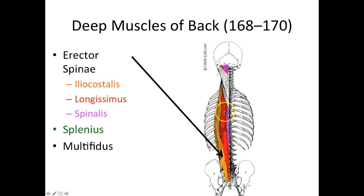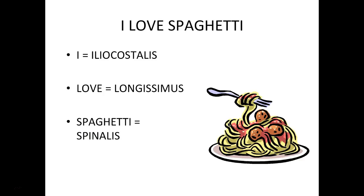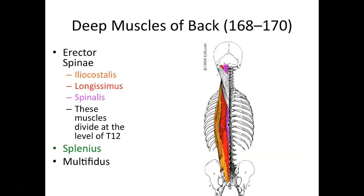Longissimus is the longest of all the erector spinae muscles, and spinalis is the closest to the spine. To remember these, we use the mnemonic 'I love spaghetti' — I for iliocostalis, love for longissimus, and spaghetti for spinalis. These muscles start dividing at the level of T12, and below that area we just call it erector spinae, where all their tendons merge together.